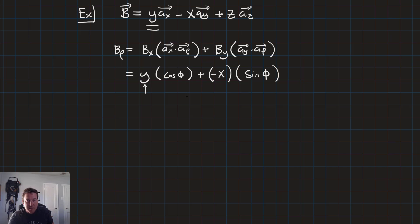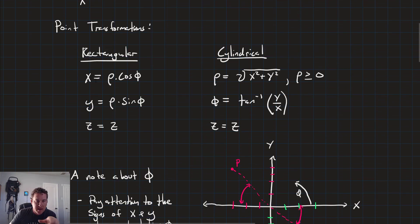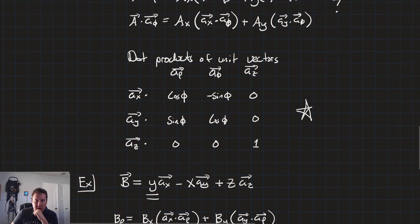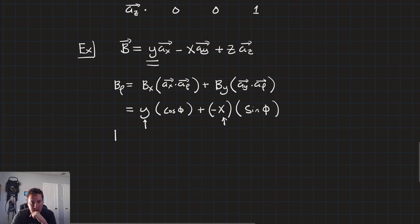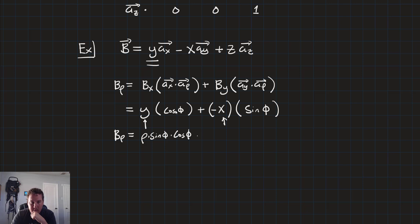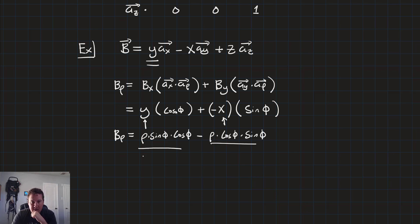Now we substitute x = rho·cos(theta) and y = rho·sin(theta). That gives B_rho = rho·sin(theta)·cos(theta) - rho·cos(theta)·sin(theta). These two terms are identical and cancel, so B_rho = 0 — there is no component in the rho direction.